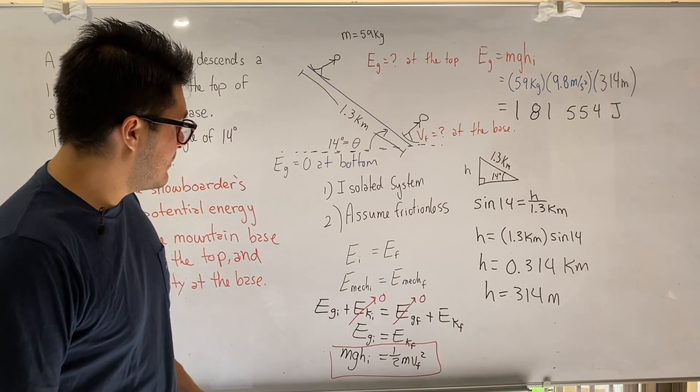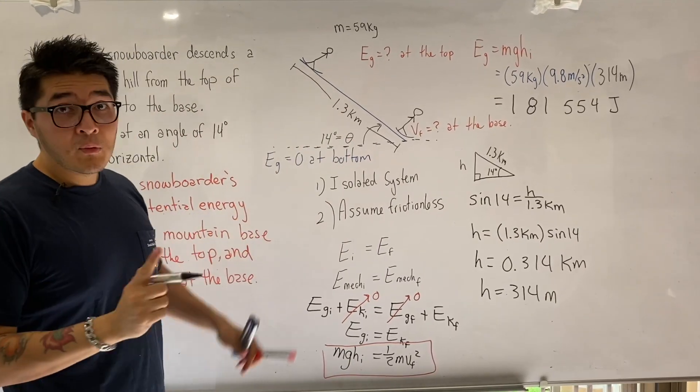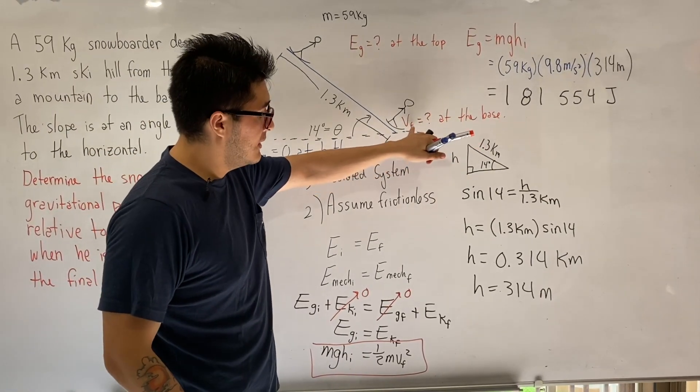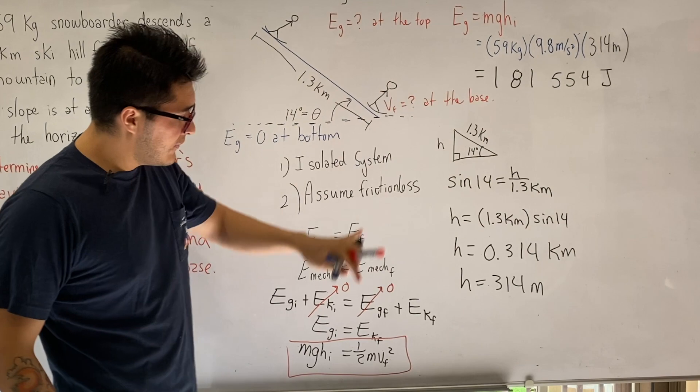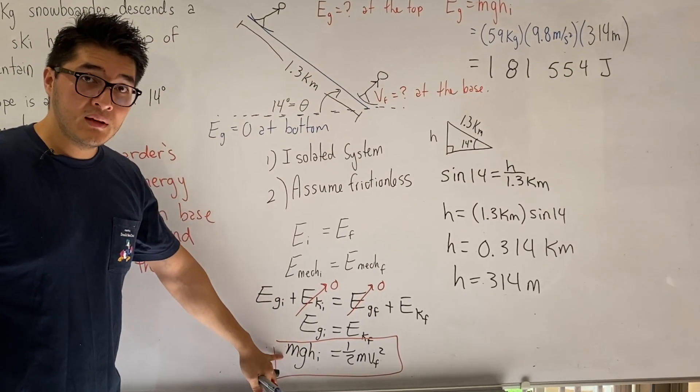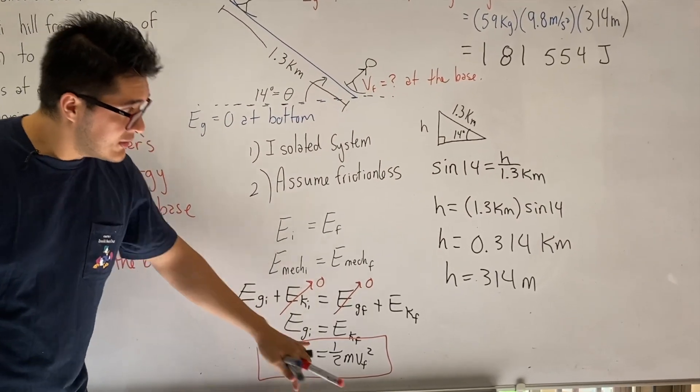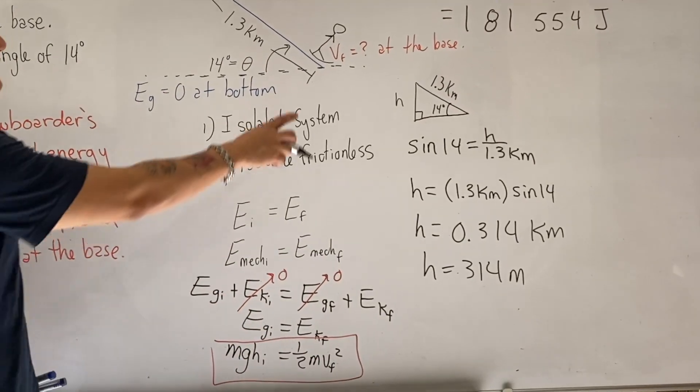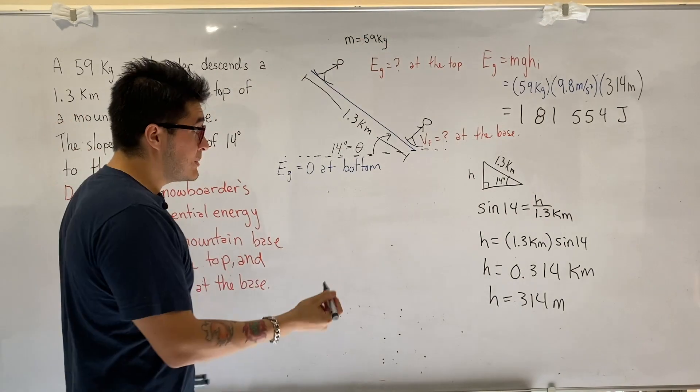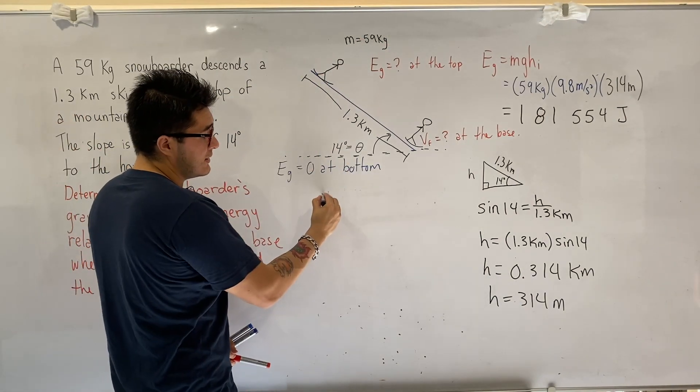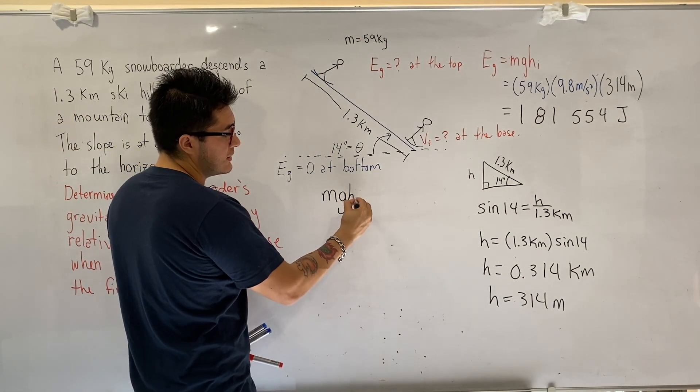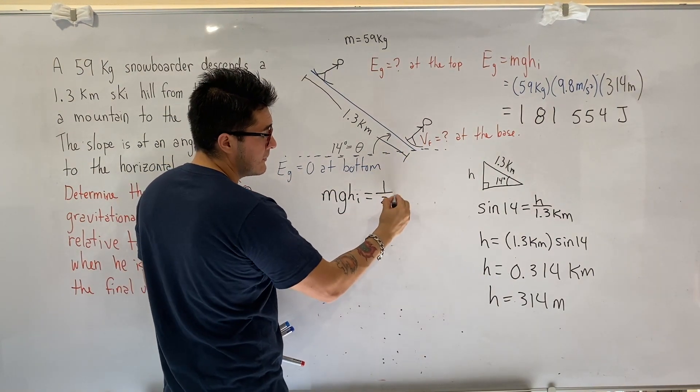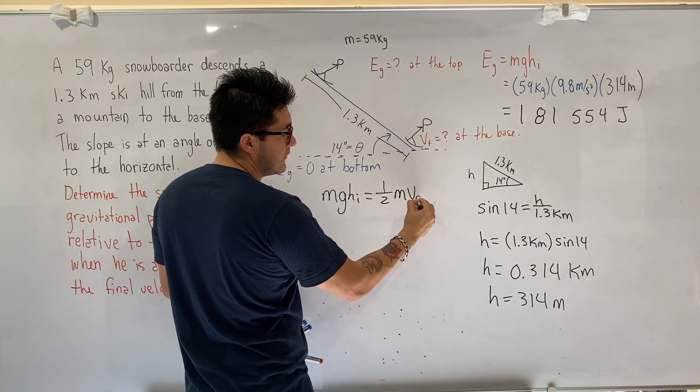Now the question would be finished there. But technically the question asked us for one more piece of information. They wanted to find out the final velocity at the base. And we already found from energy conservation the formula that we need to use. So we just have to use this formula to isolate for our unknown, V final, which is the velocity at the base.